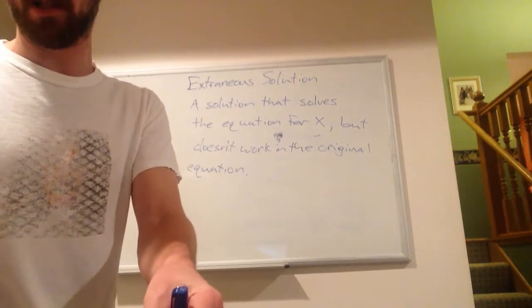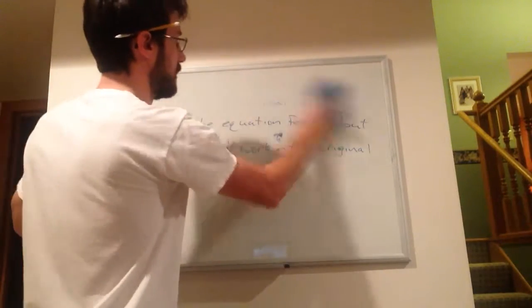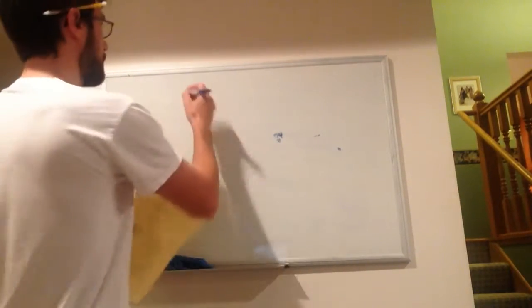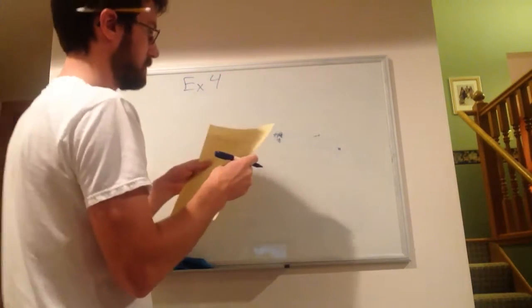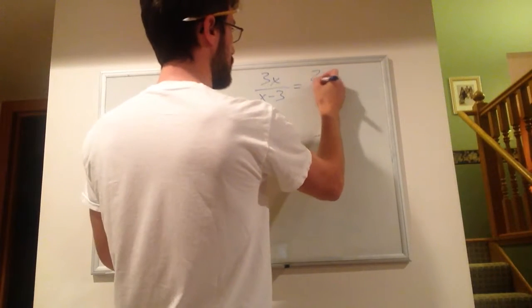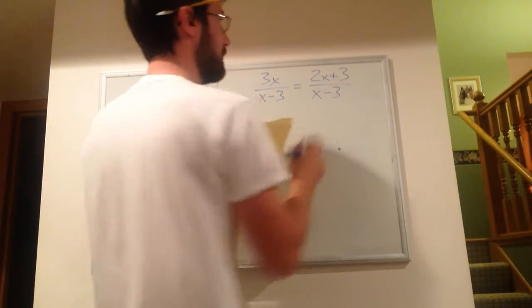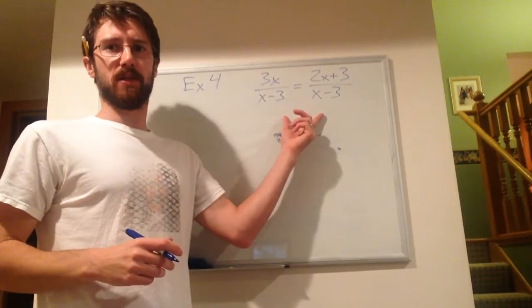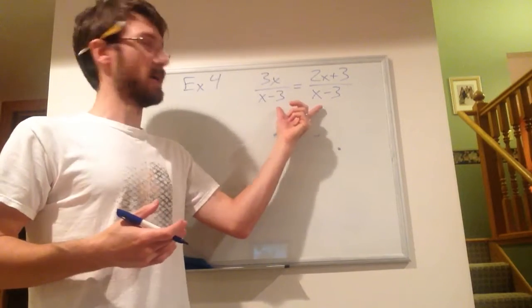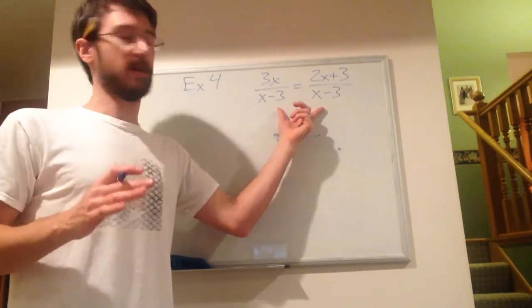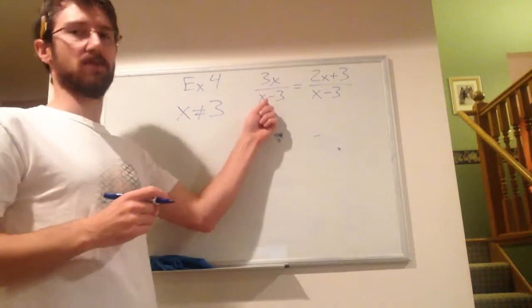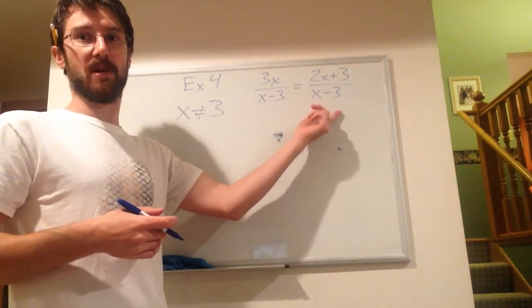Alright. So what do some of these look like, these extraneous solution type problems? For our fourth example, let's say we've got 3x over x minus 3 is equal to 2x plus 3 over x minus 3. Now, we might be looking at this with a little bit of fear, but don't worry, it's okay. We can really almost ignore the stuff that's in the bottom of the denominator when the denominators match. The one thing that we need to do, though, is to make sure that we understand the domain restrictions here are that x cannot equal positive 3. That would make this equal to zero, the denominator, so it's undefined. That would make this one equal to zero on the denominator undefined as well.